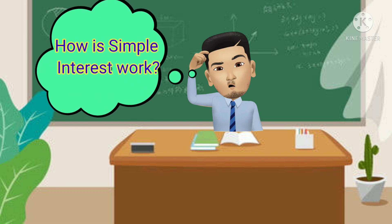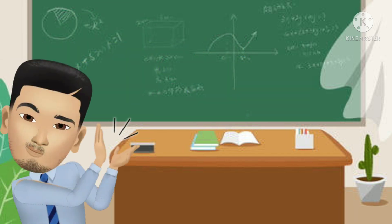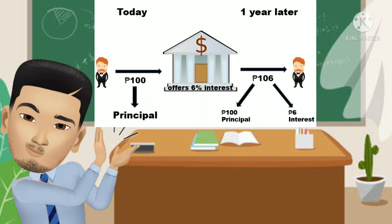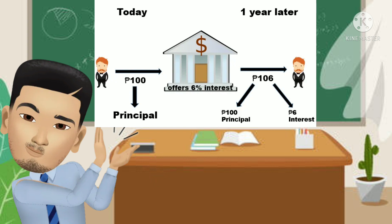How does simple interest work? Let me show you a simple illustration. For example, today you deposited 100 pesos — the principal amount — to a bank that offers 6% annual interest rate. After a year, the money or the future value became 106 pesos. So the 100 pesos principal amount, after a year, earned 6 pesos interest.